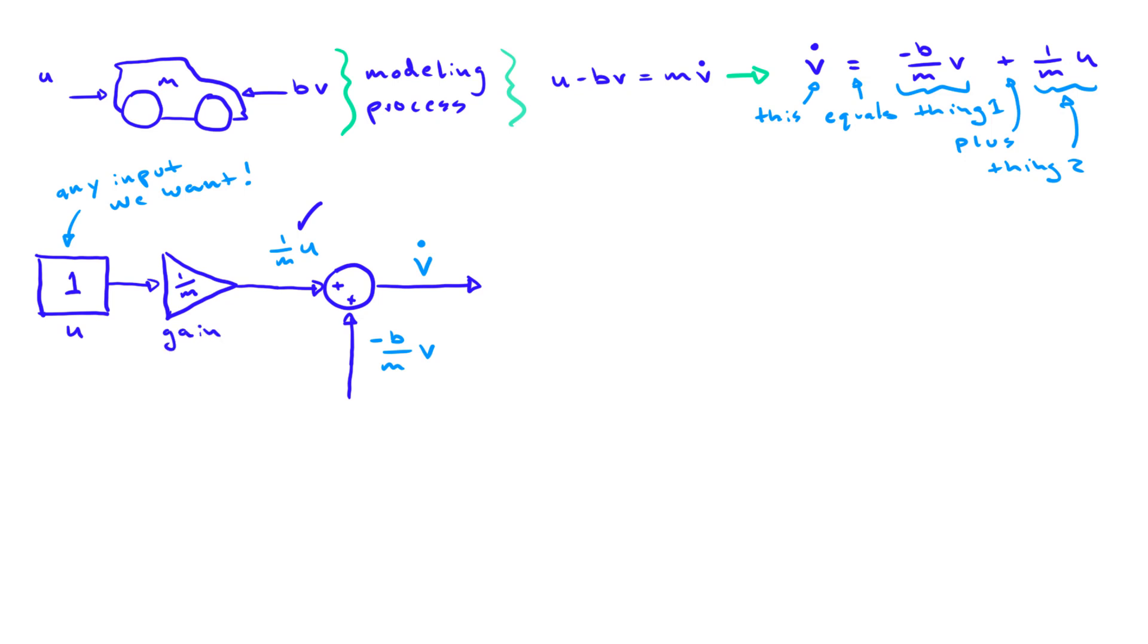We can now go to the next signal, minus b over m times v. If this signal is to represent a constant value times the velocity v, it's apparent that we'll need the velocity signal v.